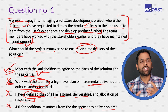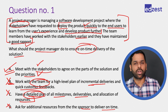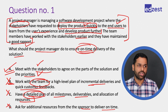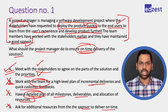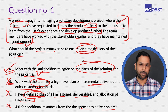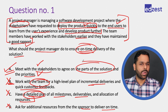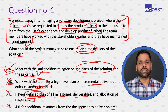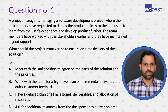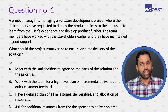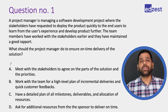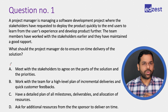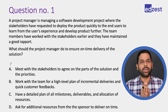In this question, stakeholders want the team to deploy the product quickly. To ensure on-time delivery, the project manager first talks to stakeholders and agrees on what solution they are looking for — then options B and C would follow. That is why A takes precedence. Whenever you solve PMP questions, focus on understanding concepts applicable to future questions, because by solving one question you prepare for four to five similar ones.